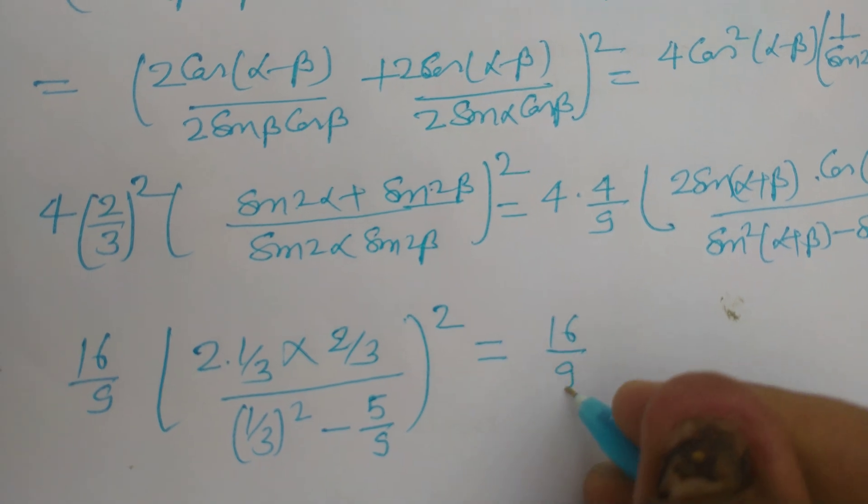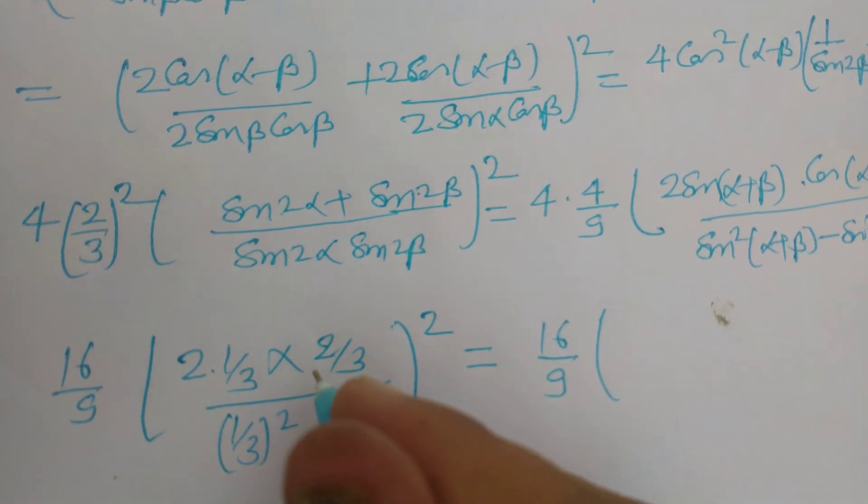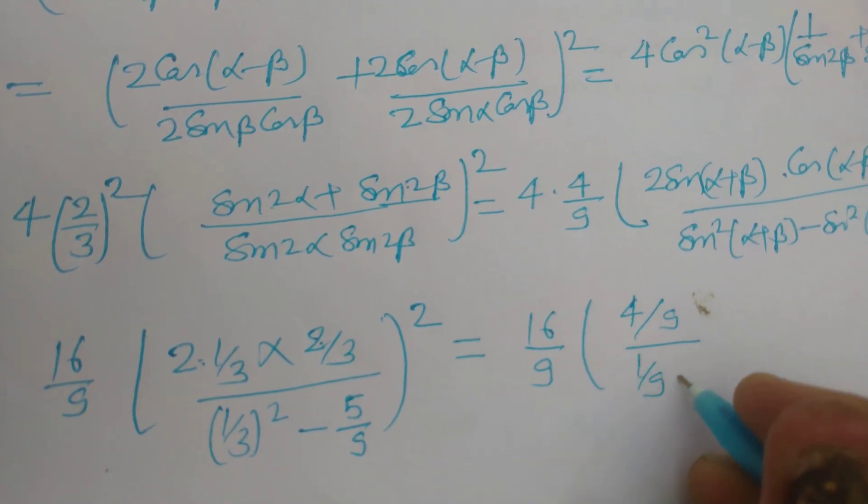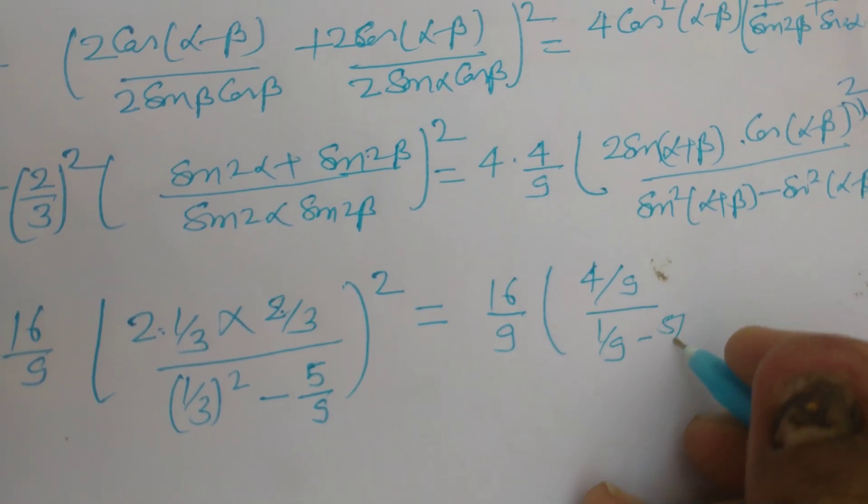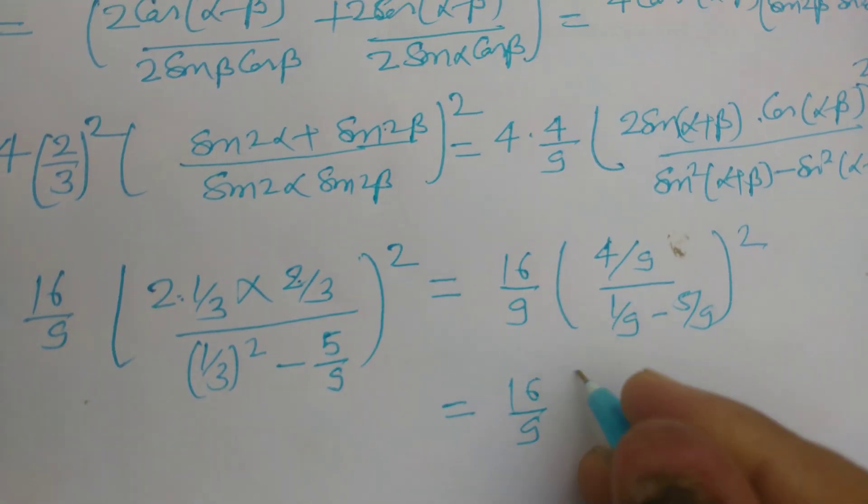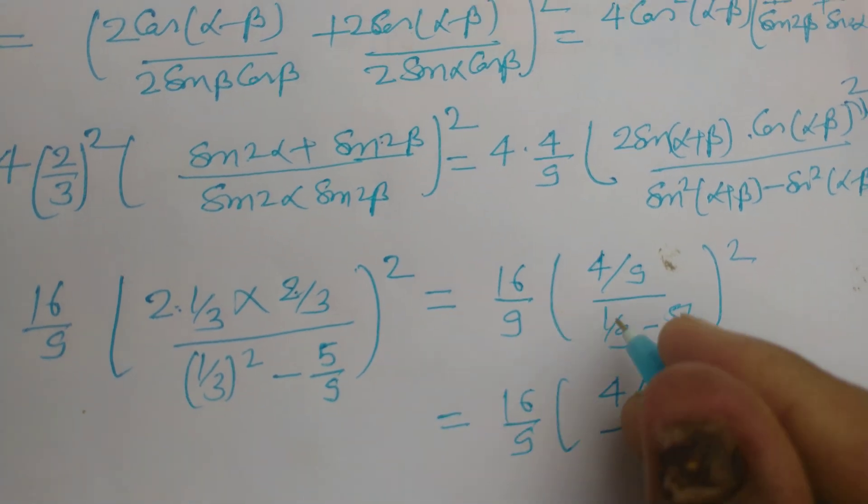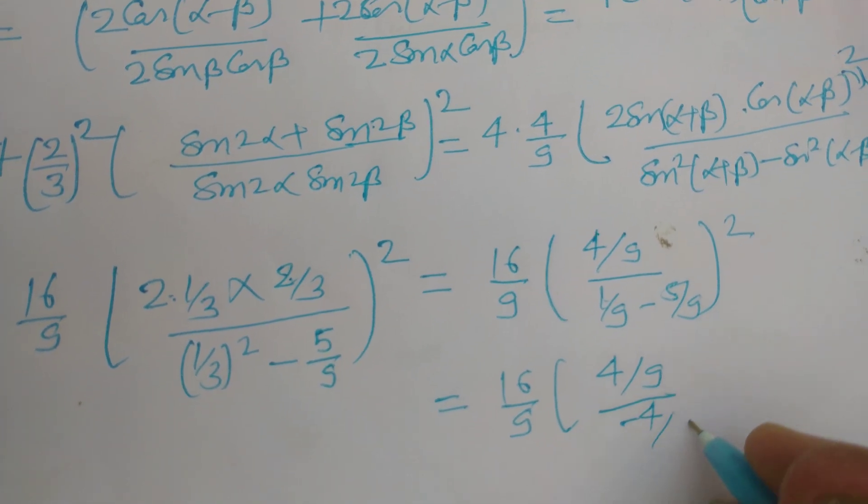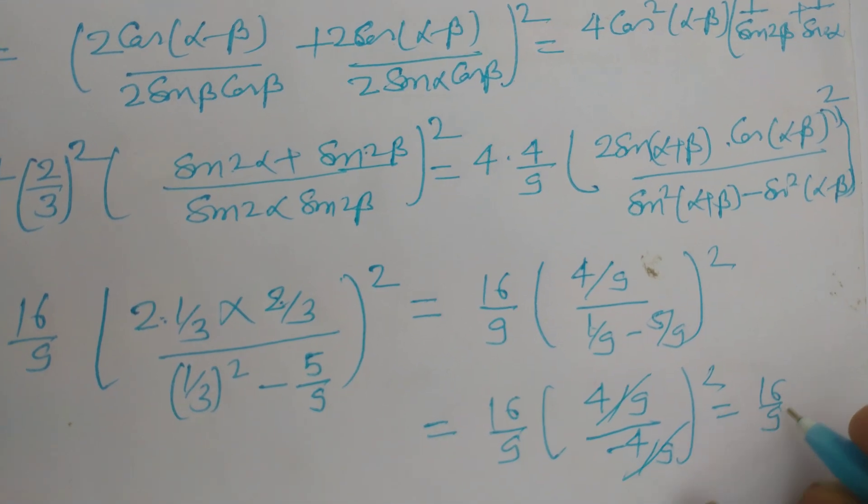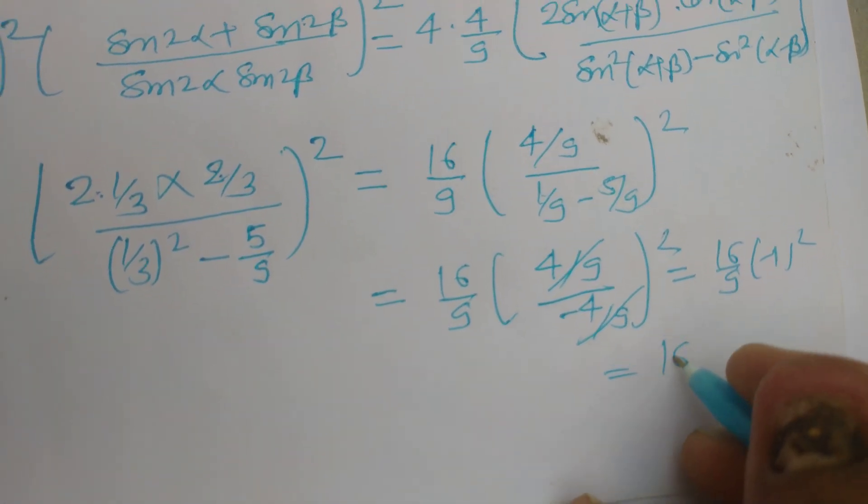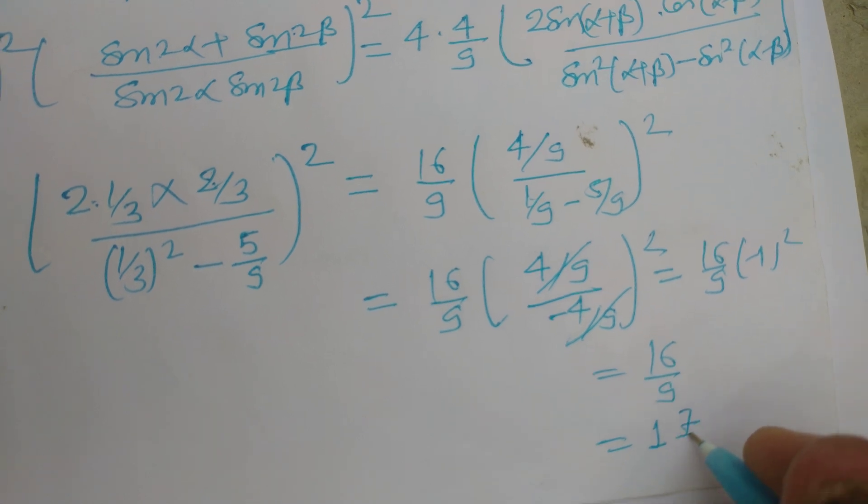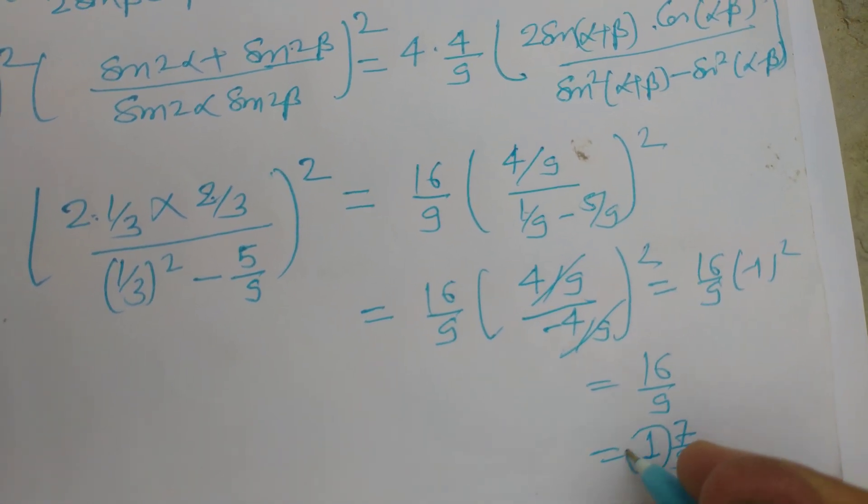Now we solve it. 16/9, this is 2×2 is 4, 4/9, 1/9, and this is 5/9 whole squared. So 16/9, this is 4/9, 1 minus 5 is minus 4/9 whole squared. This is divided by minus 1, so 16/9 ÷ 1 whole squared. We got 16/9. When we divide it, we got 1 whole 7/9. So the integer value is 1. Therefore the answer of this question is 1.